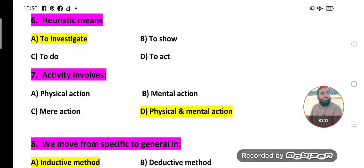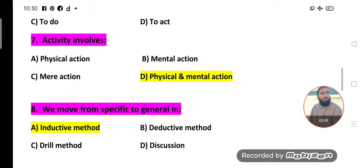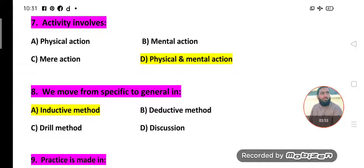Activity involves: Physical action, Mental action, Mere action. Option D is correct - Physical and mental action. Yes, both physical and mental action. We are involved in activity physically and mentally. That's why Option D is the correct option. Mere action means just only action, no. Physical and mental action - we are mentally and physically involved in an activity.